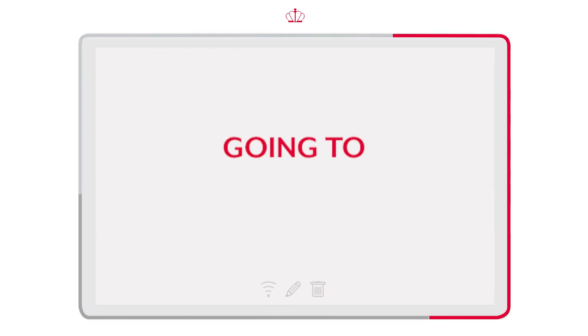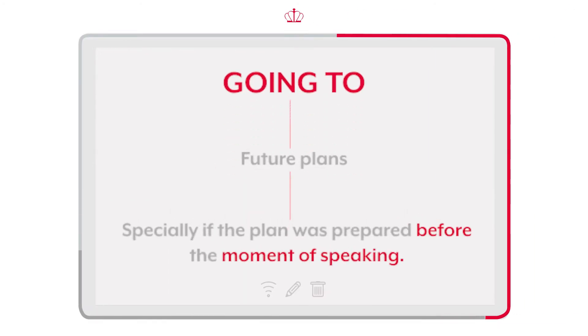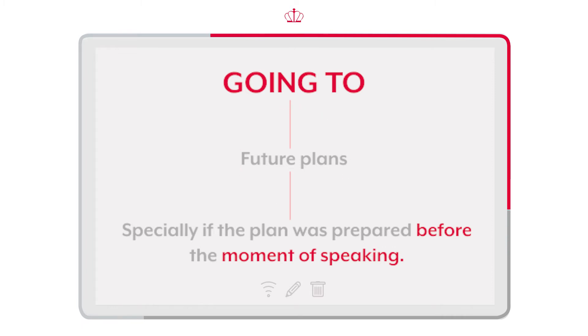We use 'going to' to talk about our future plans, especially if the plan was prepared before the moment of speaking. Usamos el 'going to', o 'voy a', para hablar de planes futuros, especialmente si hablamos de planes hechos antes del momento en el que estamos hablando. Now we are going to check the structure to make a sentence. Veamos la estructura.